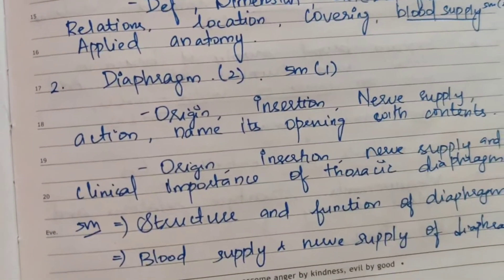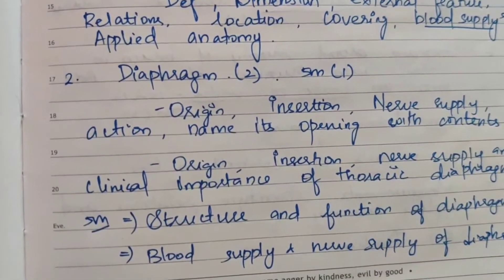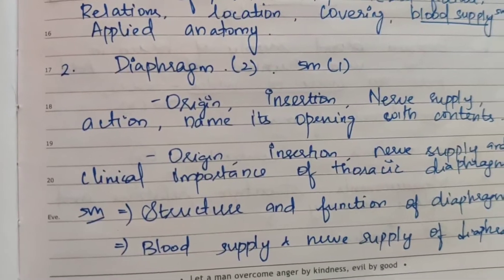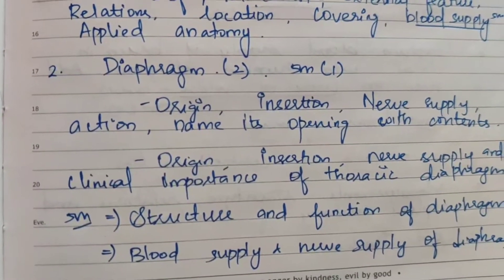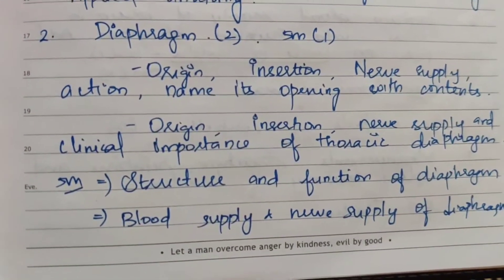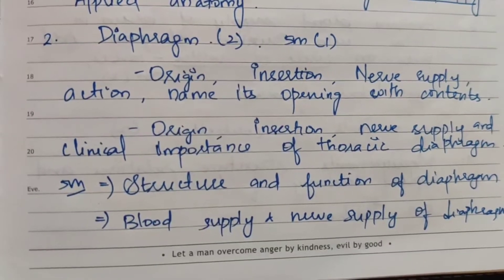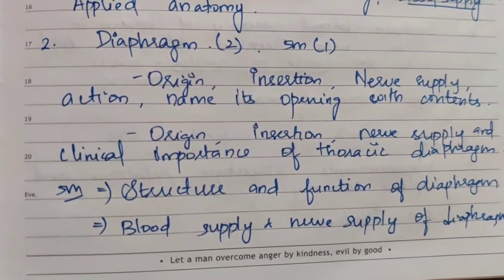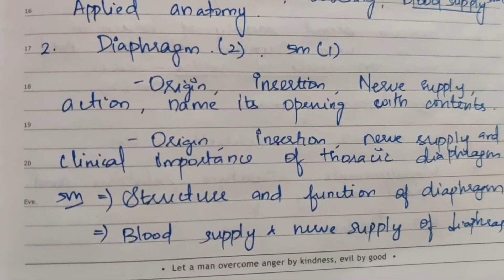Next, the diaphragm appears as a 15-mark question 2 times and as a 5-mark question as well. Key subtopics: origin, insertion, nerve supply, action, openings with contents, and clinical importance of the thoracic diaphragm. Structure, function, blood supply, and nerve supply of the diaphragm have appeared 4 times.